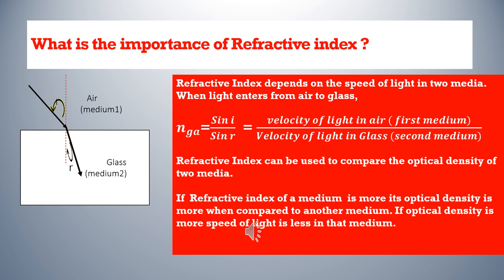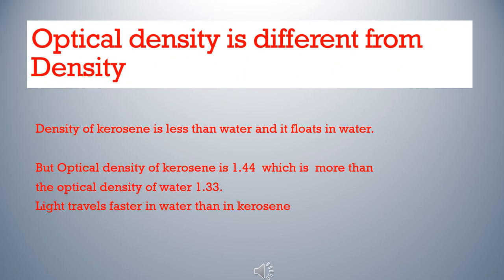Remember that density of a substance is different from optical density. For example, comparing kerosene and water: kerosene's density is less than that of water and it will float on water. But when we compare optical density, the optical density of kerosene is 1.44 and that of water is 1.33 only. That means light travels faster in water than in kerosene.